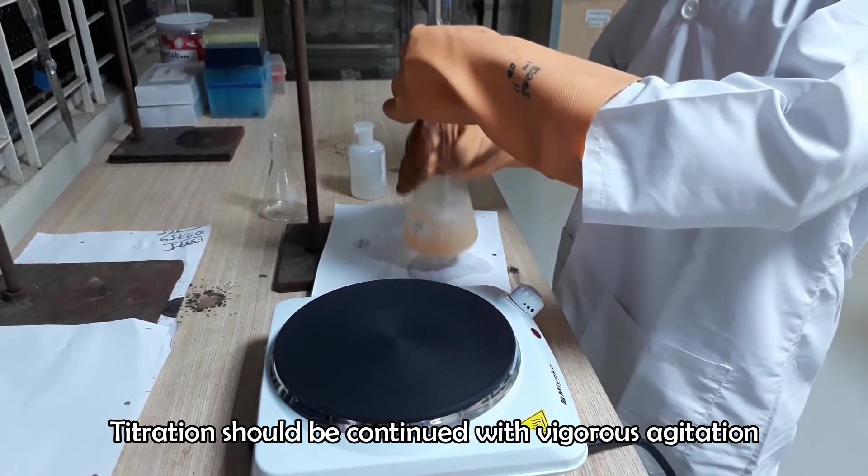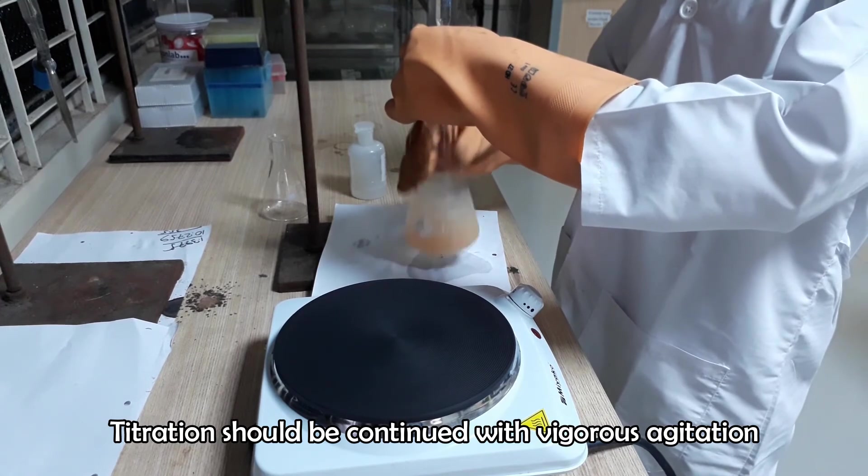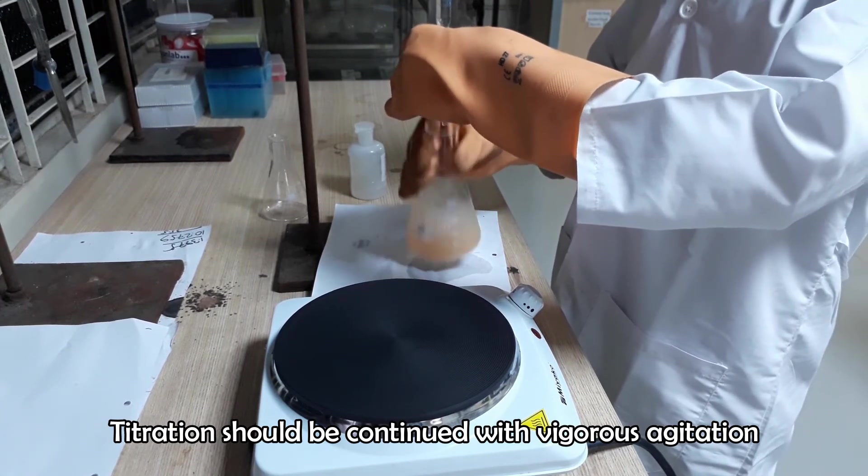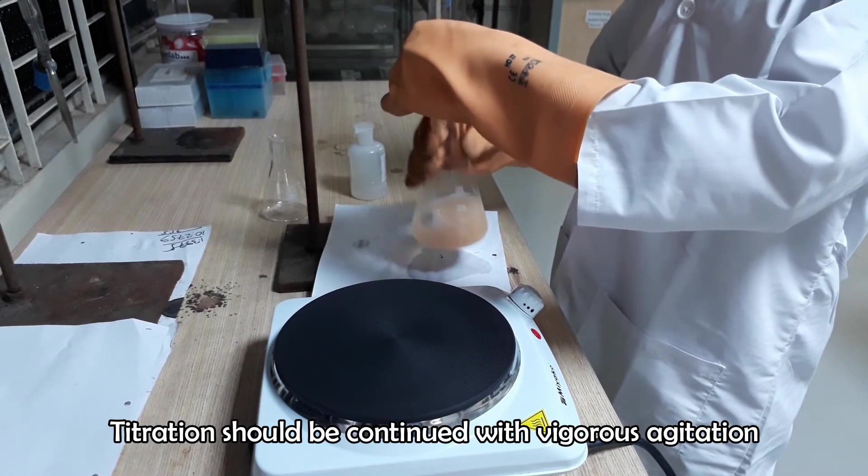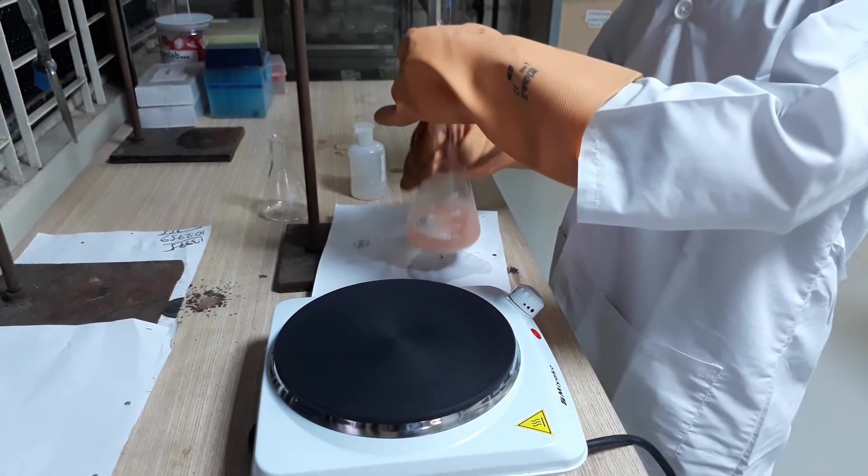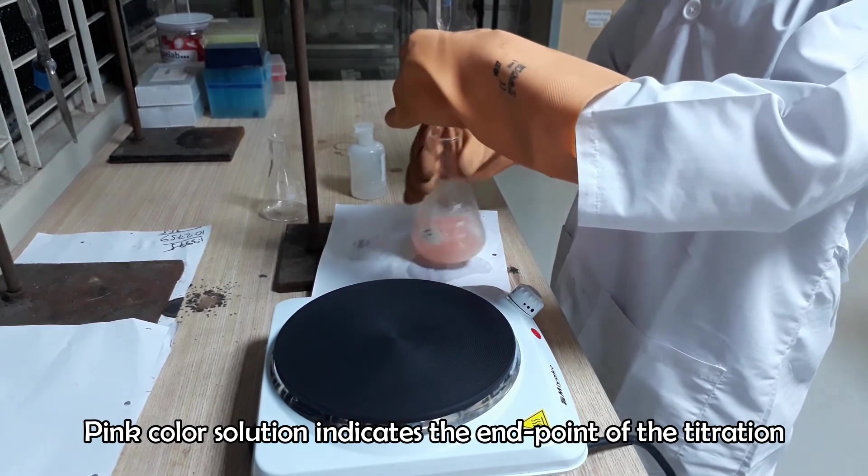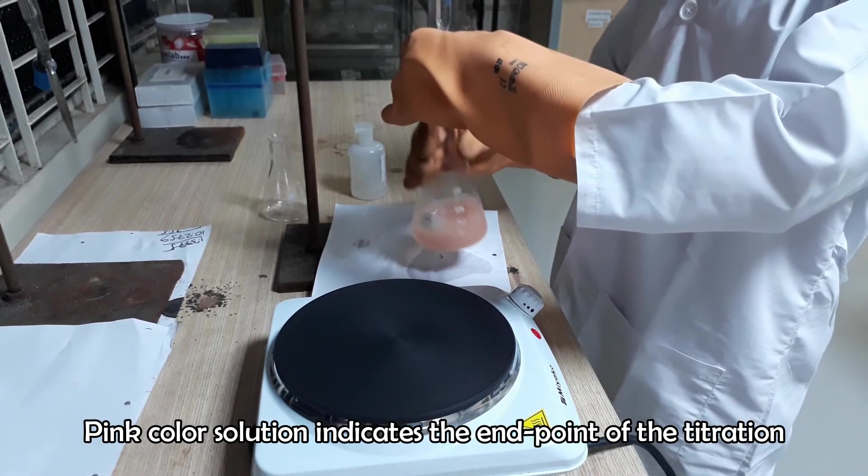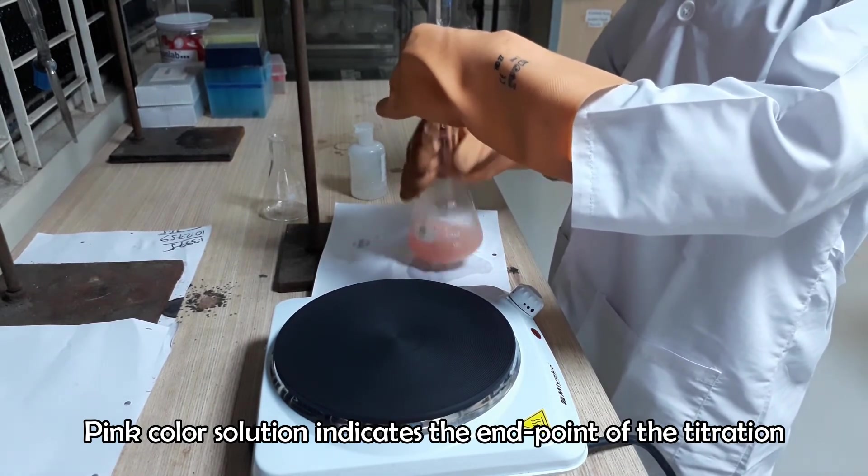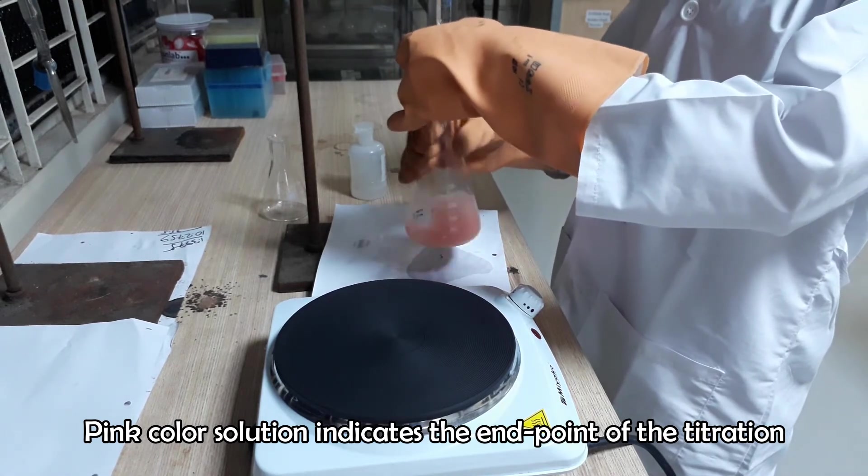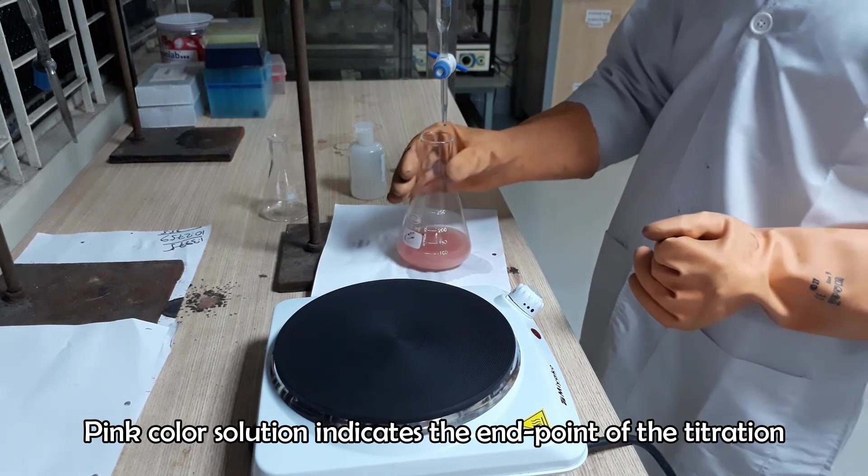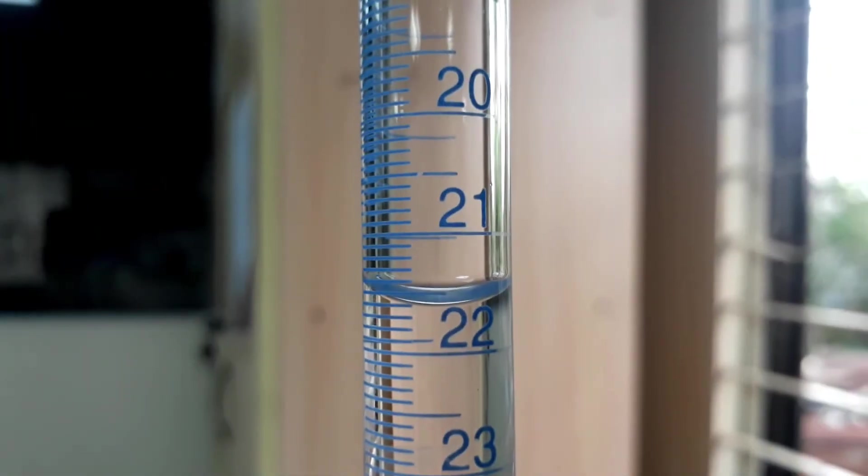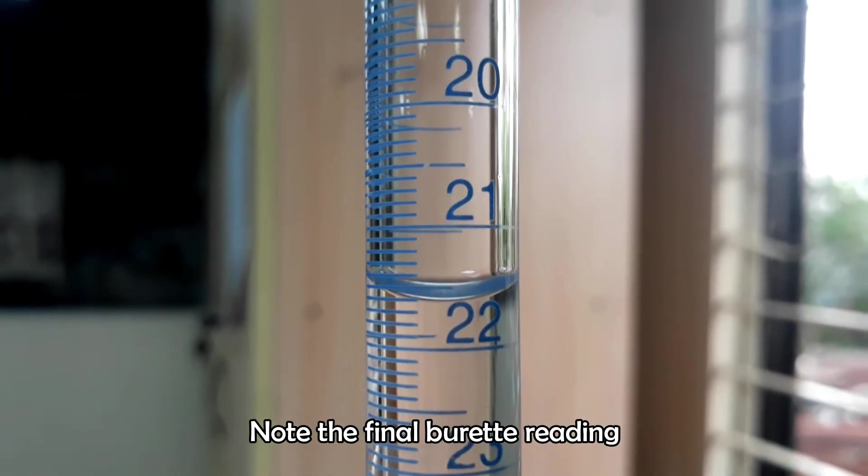Titration should be carried out with vigorous agitation of the flask to get accurate results. Stop the titration when the solution color is changed into light pink. Note the final burette reading.